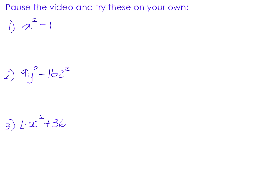Example one: a squared minus 1. First, check for a highest common factor — there isn't one, as there is nothing common to either term. Next, check whether it is the difference of two squares. a squared is a perfect square, 1 is a perfect square, and they are being subtracted — so it is the difference of two squares. It factors into sum and difference brackets: (a plus 1)(a minus 1).